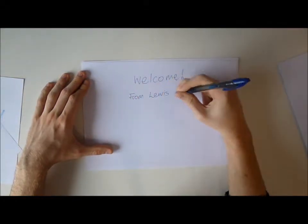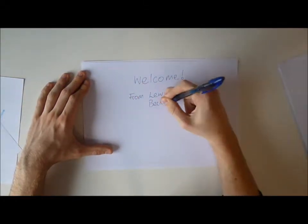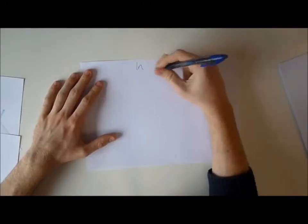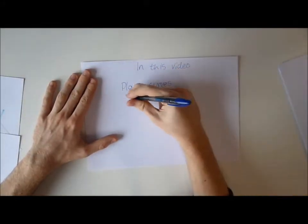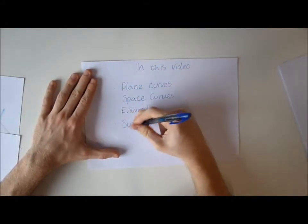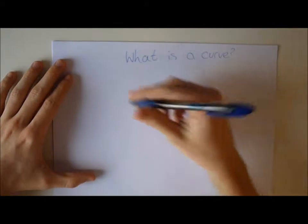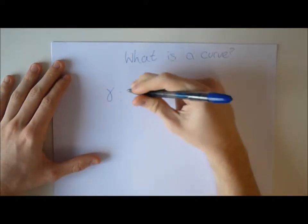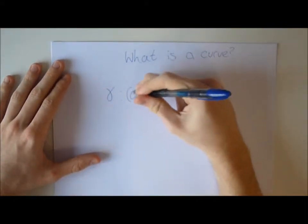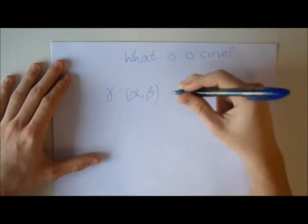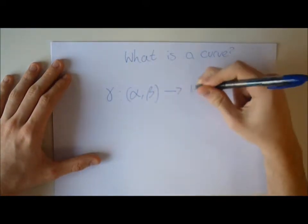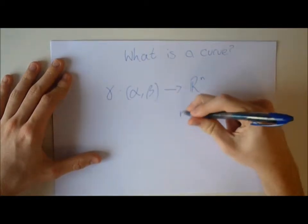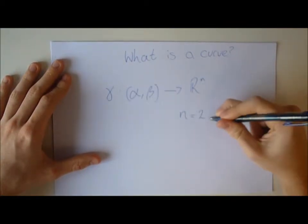Hello and welcome to our video. Here we'll be showing you the basic concepts of plane curves, space curves and their examples, and surfaces. The first question we need to ask ourselves is: what is a curve? A curve is a function gamma from the open interval (alpha, beta) to R^n, where n is 2 or 3.